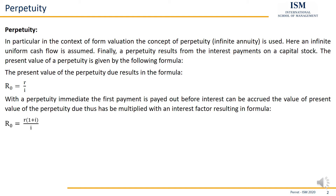If I take out the first payment directly at the beginning of the first period, I need to have a slightly higher initial capital stock. That's why the formula for the perpetuity immediate looks slightly different — it is multiplied by 1 plus i. The capital stock decreases by the first payment, and only then does it start generating new interest.